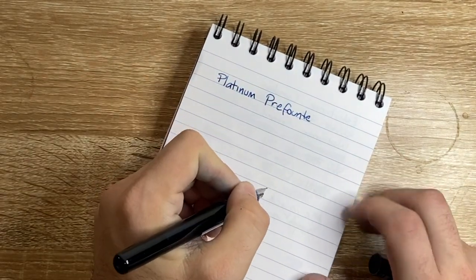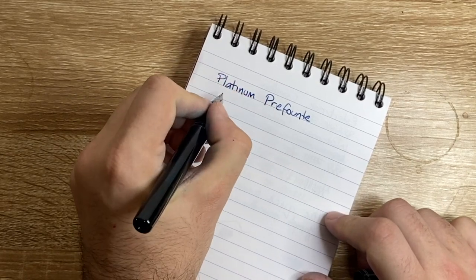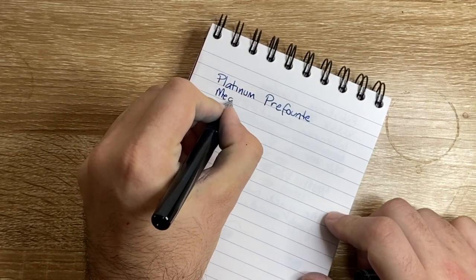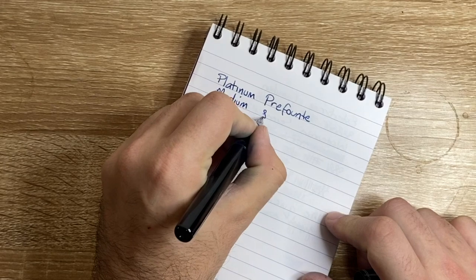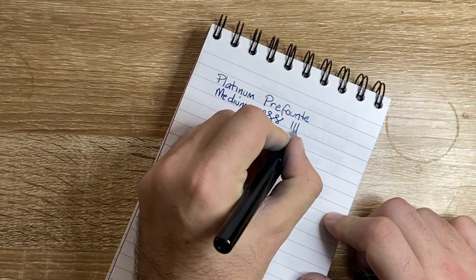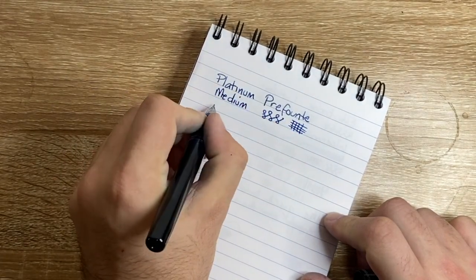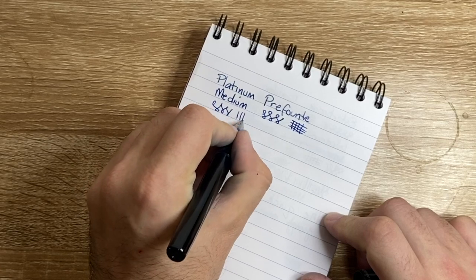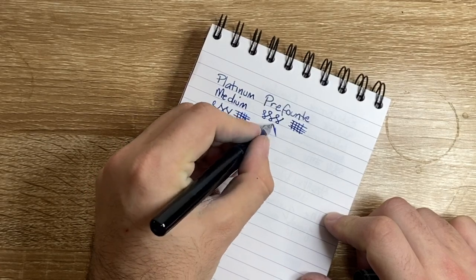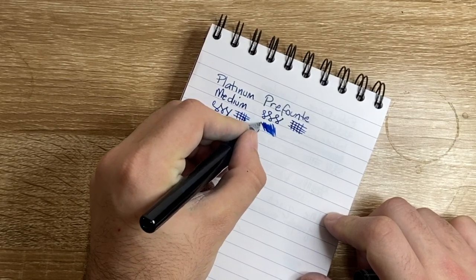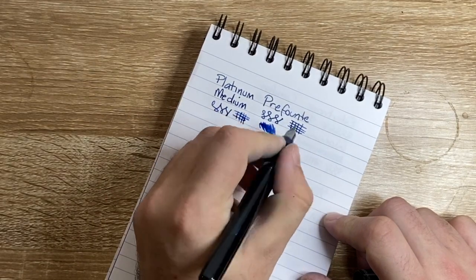So what we have here is the platinum. Now, I'm going to say straight up, that is super, super smooth. This is a medium. They're just steel nibs, but that writes so smoothly. That's super impressive.